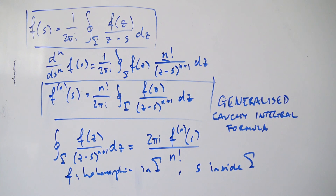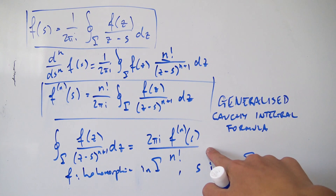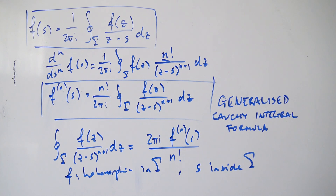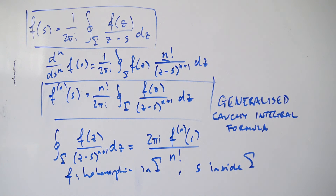The two conditions required to use these Cauchy integral formulas are that f is holomorphic inside gamma and that s is inside gamma. I might do a video in the future going through examples of evaluating these integrals using Cauchy's integral formula. That's it for this video — hope you enjoyed it, make sure to like and subscribe, and have a wonderful day!